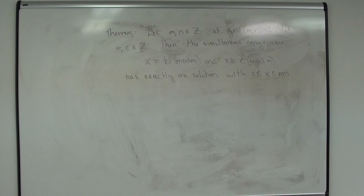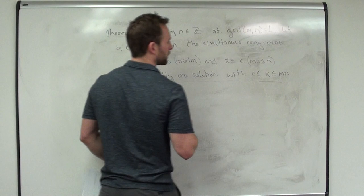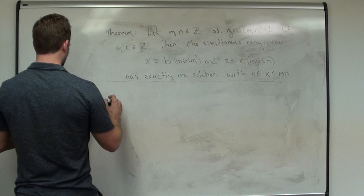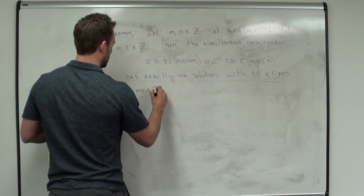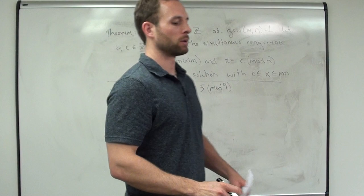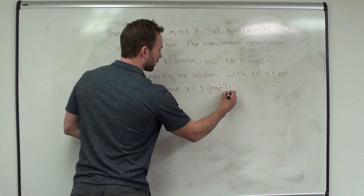So what we'll look at — we'll look at one of your homework prompts right now. It says find a solution to x congruent to 3 mod 7, and x congruent to 5 mod 9. Notice that 7 and 9 are a co-prime pair — that's my M and my N.